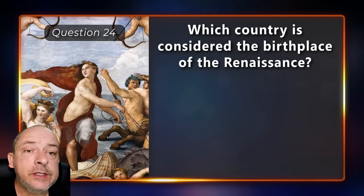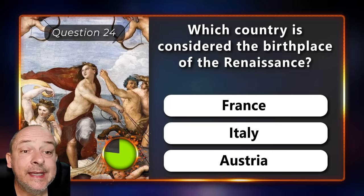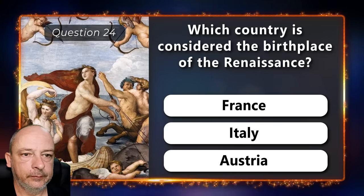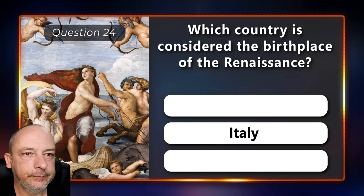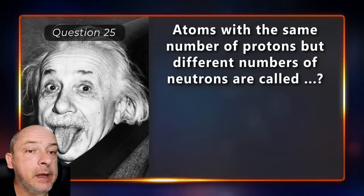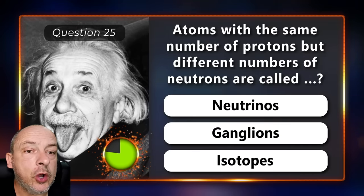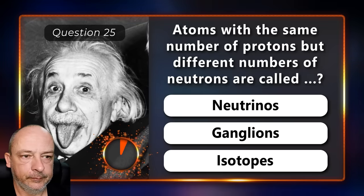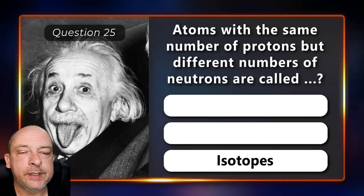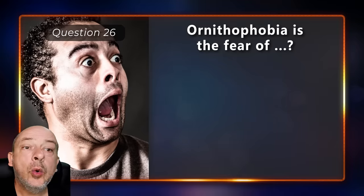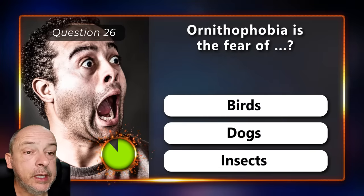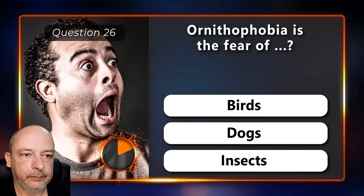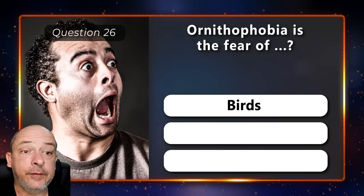Which country is considered the birthplace of the Renaissance — France, Italy, or Austria? The correct answer is Italy. Atoms with the same number of protons but different numbers of neutrons are called neutrinos, ganglions, or isotopes? The answer is isotopes. Ornithophobia is the fear of birds, dogs, or insects? It is the fear of birds.